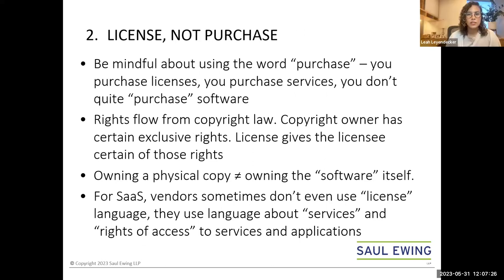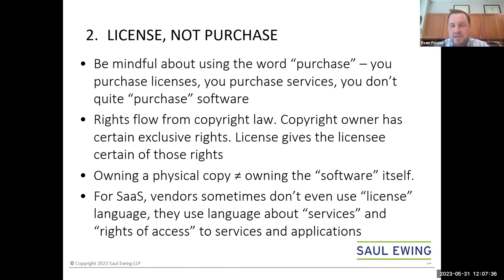There was a request to repeat the difference between object code and source code. Object code is the ones and zeros that comprise a piece of software — it is not readable by humans — whereas source code is the actual computer language that humans write and read, which then gets compiled into the object code. They're part and parcel of the same thing, but the key distinction is: source code is human-readable, and object code is not.